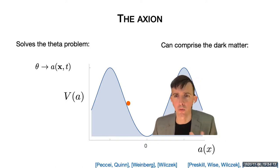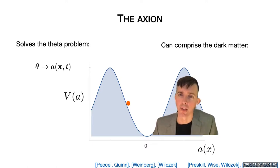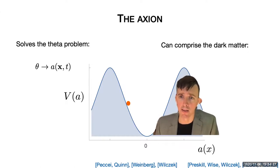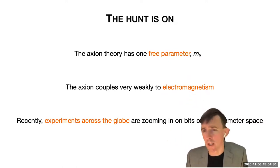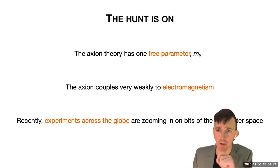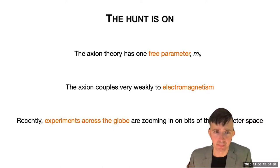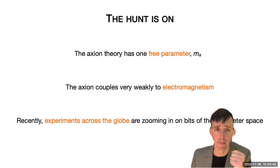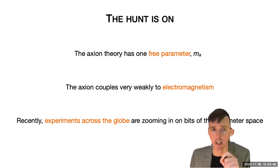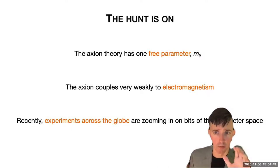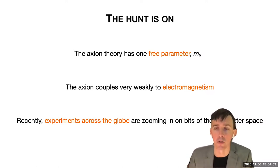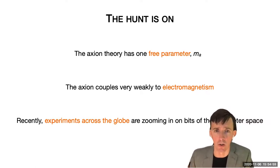So over the past few years, the axion dark matter proposal has emerged as a leading contender to explain this longstanding problem in cosmology. And now the hunt is on. The axion theory has one free parameter — the mass of the axion. We also know that the axion has a weak coupling to electromagnetism, and this coupling is now used by experiments across the globe to search for the axion and to zoom in on various bits of the parameter space. The race is on to discover the particle if it exists.